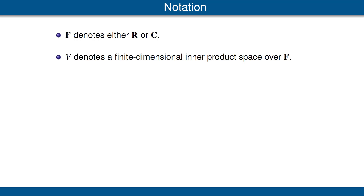Let's quickly review the notation we need for this section. F denotes either the scalar field R of real numbers or the scalar field C of complex numbers. Also, V denotes a finite dimensional inner product space over our field F.